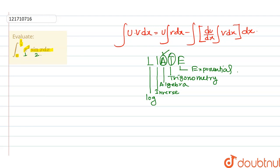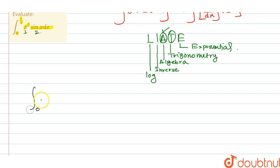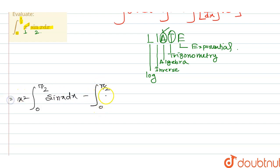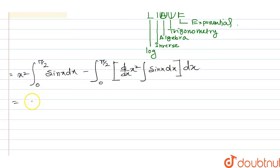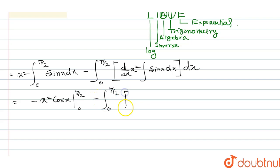Applying integration by parts: ∫₀^{π/2} x² sin x dx. The integration of sin x is −cos x. So we get: −x² cos x evaluated from 0 to π/2, minus ∫₀^{π/2} d/dx(x²) · (−cos x) dx, which gives us minus of 2x times (−cos x).